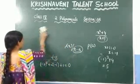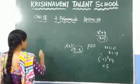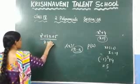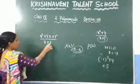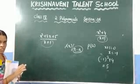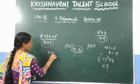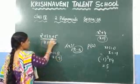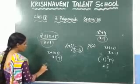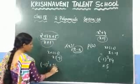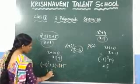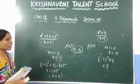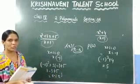One more example before the exercise: x squared plus 3x plus 5 divided by x plus 1. The first step is to find the zero of the divisor. Equate x plus 1 to 0, giving x equals minus 1. Substitute minus 1 into the dividend: minus 1 whole square plus 3 into minus 1 plus 5, which is 1 minus 3 plus 5. The remainder is 3.